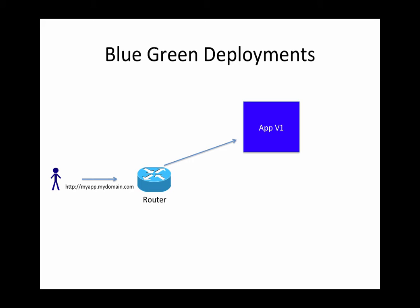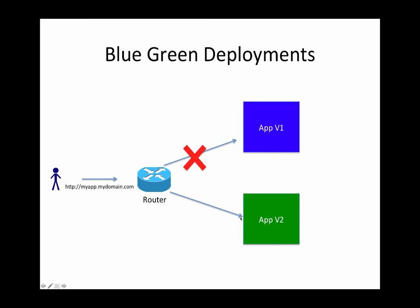Now let's take an example of a change made to this application — that is version two, and we'll treat version two as a green deployment. Once that green deployment is set up and equivalent to the production setup, what we do is switch over the connection from the router to the green version, and at the same time remove the connection to version one. It happens quickly because all you need to do is make a change to the router.